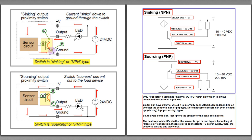As for the E emitter, it can be either internally connected to the negative V or the ground wiring, or it can be internally connected to the positive V. This depends on whether it is a sinking or a sourcing type. If this switch is a sinking or NPN type switch, then the E emitter will be connected to the ground or negative V wiring. If the switch is a sourcing or PNP type switch, then the E emitter is internally connected to the positive V wiring.